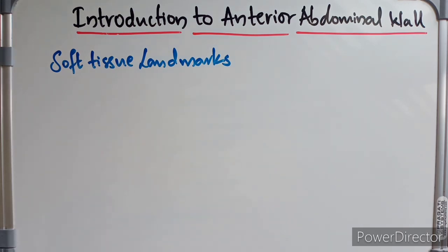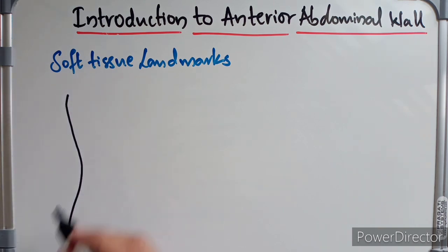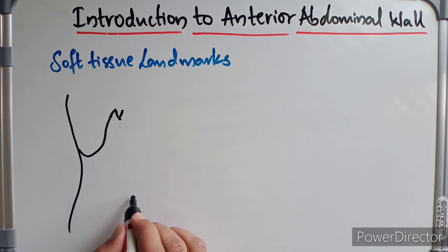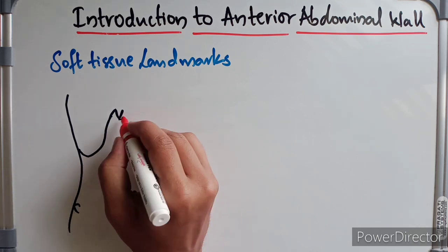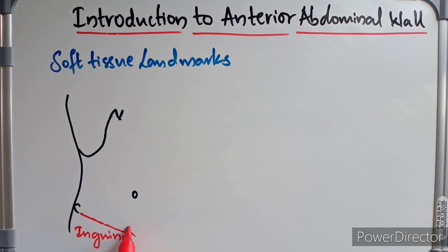Now I'm going to draw the abdomen to illustrate the soft tissue landmarks. We have the lateral edge of the body, the 12th costal rib, the xiphoid process, the umbilicus, the anterior superior iliac spine of the hip, the pubic tubercle, and the inguinal ligament running between them.